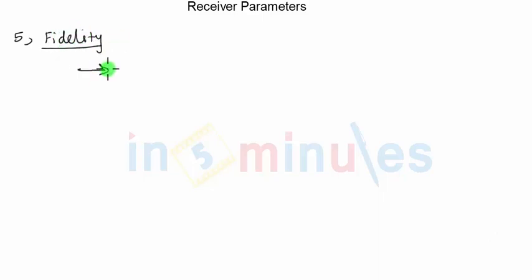When will the output signal not be an exact replica? That will be the case whenever there is a change in amplitude function of the signal, change in frequency of the signal, or change in phase of the signal.